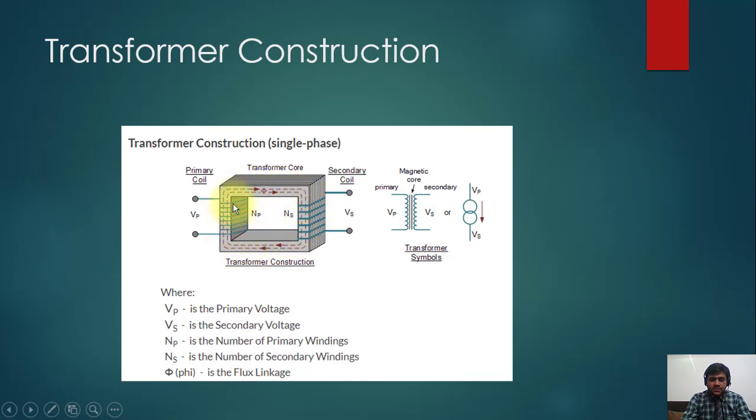So they are electrically isolated, which has many advantages. Electrical isolation is important, and it is connected through magnetism, so it is called magnetic coupling. This is the explanation of electrical and magnetic coupling.